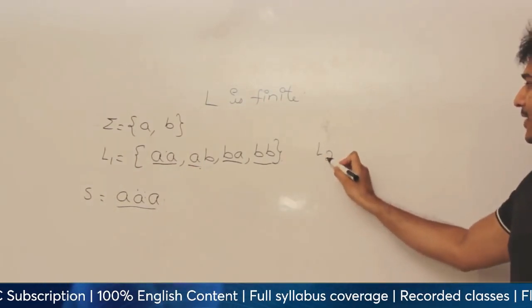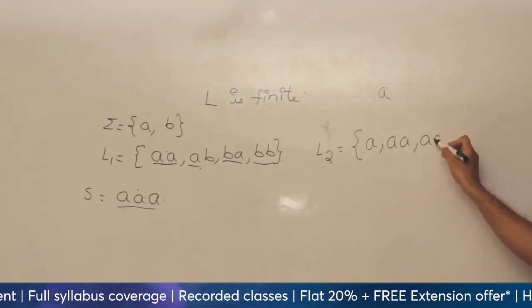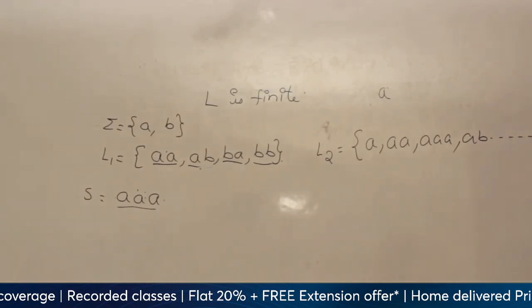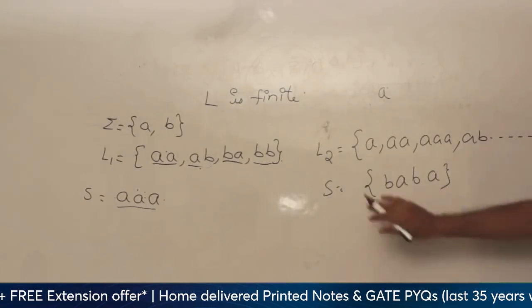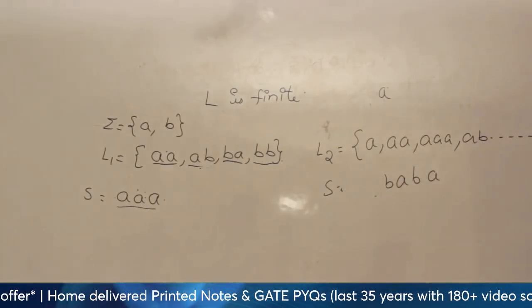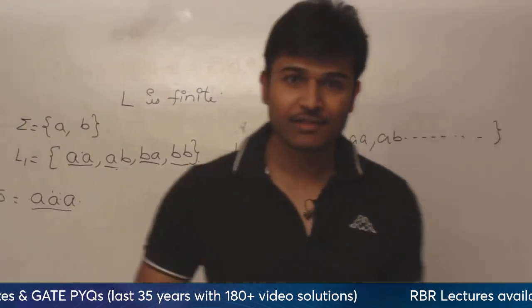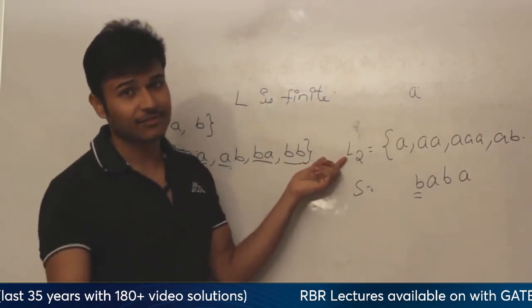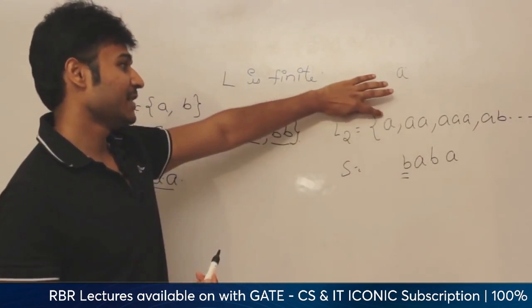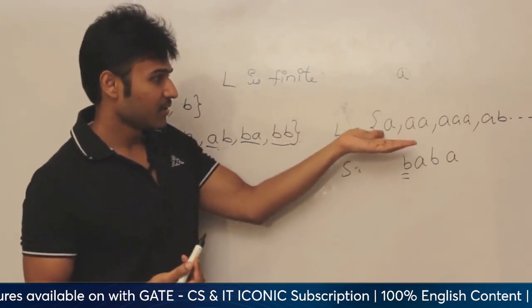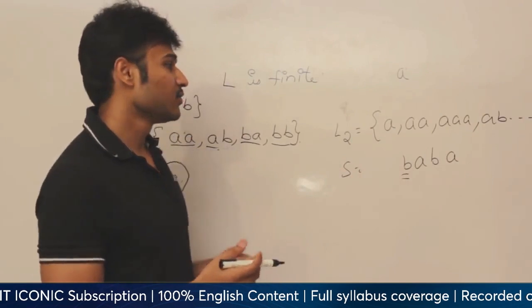But what if the language is infinite? Let us say language L2 is the set of all strings which are going to start with 'a'. Then the language contains: a, aa, aaa, ab, and so on — lots of strings. If any string is given, let us say baba, and I ask you whether this string is present in language L2 or not, the problem is how long should I be comparing? For a machine, it doesn't think logically — you have to give it a method. If this language is infinite, then if you use the method of linearly searching all these strings and matching, the machine will take forever to answer this question.